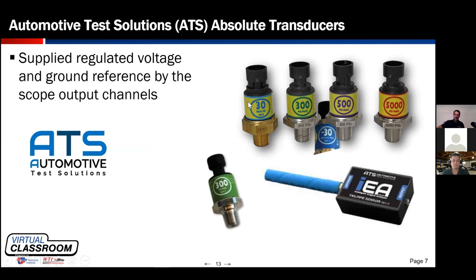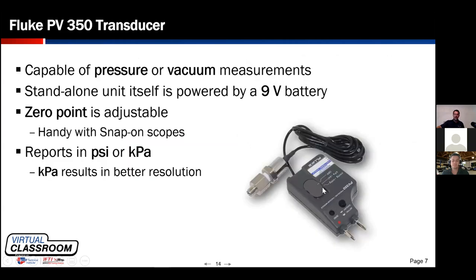What's different about the ATS devices is they aren't self-powered like the WPS — they don't have an internal battery. The ATS lab scope has its own output jacks that drive the transducers, just like a PCM provides reference voltage and ground for our MAP sensor. The ATS scope provides reference voltage and ground for the transducers. You can sample four of them at a time. They also make a separate driver box providing reference voltage and ground to interface these transducers with any lab scope out there.